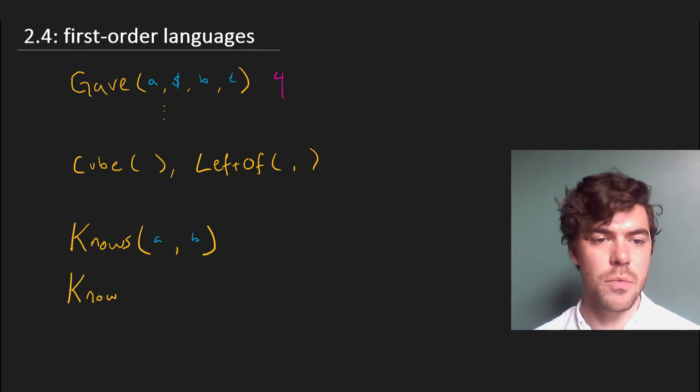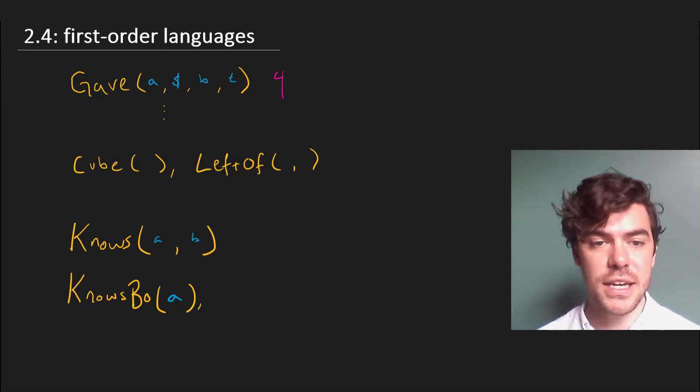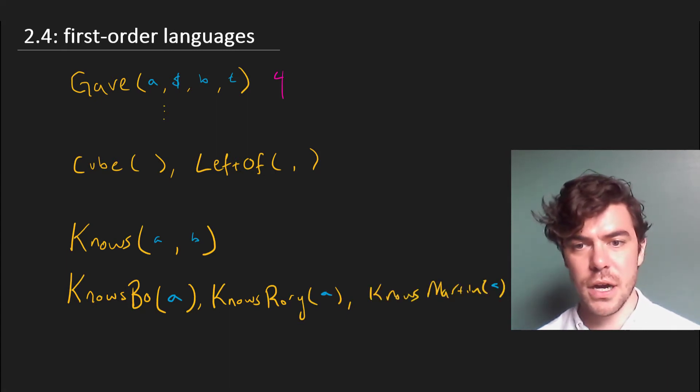For instance, you know me, so knows Bo is an option that you could use to construct your language. The problem is that if you construct predicates like this in this much more specific way, they aren't very versatile. So suppose you want further to say that A knows each of the TAs. You'd have to construct new predicates: knows Rory and knows Martin. And this would make our language needlessly complicated.